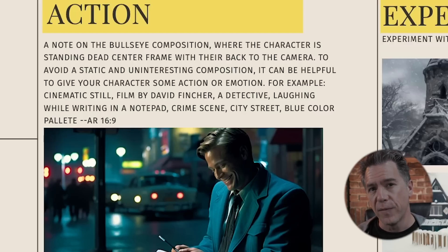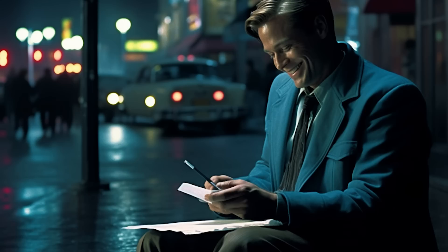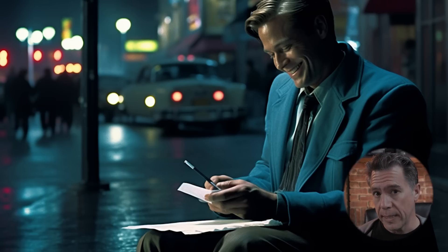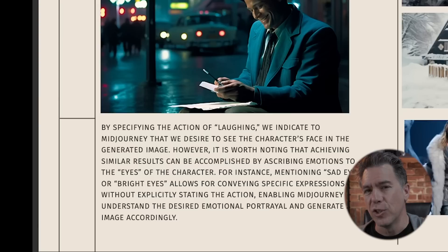A quick note on action and character poses — this is something a lot of you have probably run into before. Mid Journey tends to like its bullseye composition, or worse, bullseye composition with the character's back to camera. A trick to get around that is to direct your character in some kind of emotive action. For example: cinematic still, filmed by David Fincher, a detective laughing while writing in a notepad, crime scene, city street, blue color palette. By specifying 'laughing,' we've indicated to Mid Journey that we want to see his face. You can achieve similar results by ascribing emotion to eyes, such as 'sad eyes' or 'happy eyes,' which will avoid the back-to-camera issue.